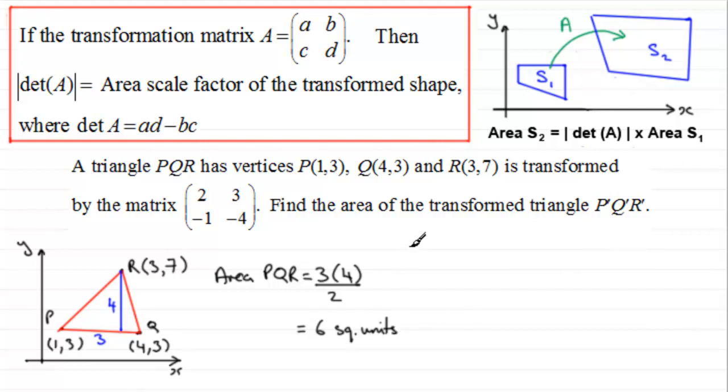Okay, now, we've got the area then of our first shape, PQR. And now we need to work out the magnitude of the determinant of A.